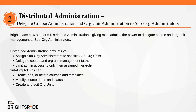To reduce bottlenecks for system administrators managing large organizations, this release introduces distributed administration. Distributed administration allows system administrators at the organization level to delegate specialized tasks to sub-org administrators that are restricted to specific sub-org units and their descendants. For example, in a large school board, a system administrator can assign sub-org administrators to manage specific schools. Those sub-org administrators can then perform delegated tasks such as creating courses and templates, changing course start and end dates, adjusting availability statuses, deleting course offerings and templates, and creating or editing org units.